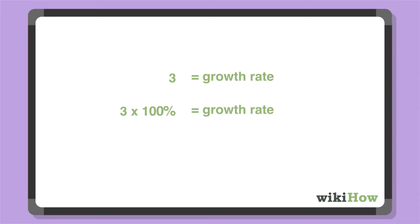Multiply the growth rate by 100% to convert it to a percent value. 3 times 100 is 300%, which means the ending value is 300% bigger than the starting value.